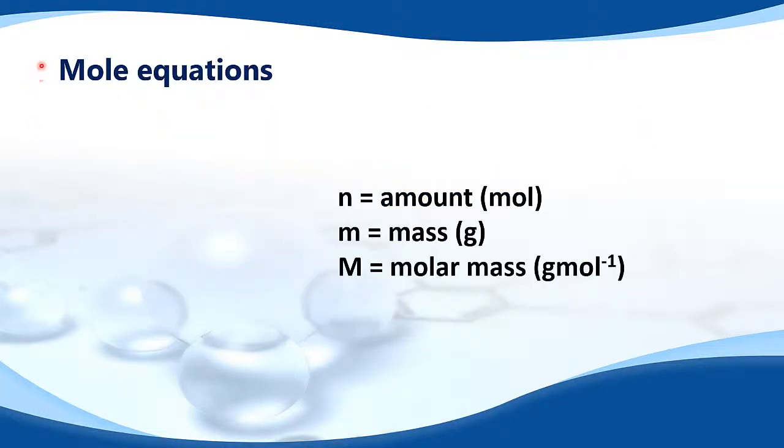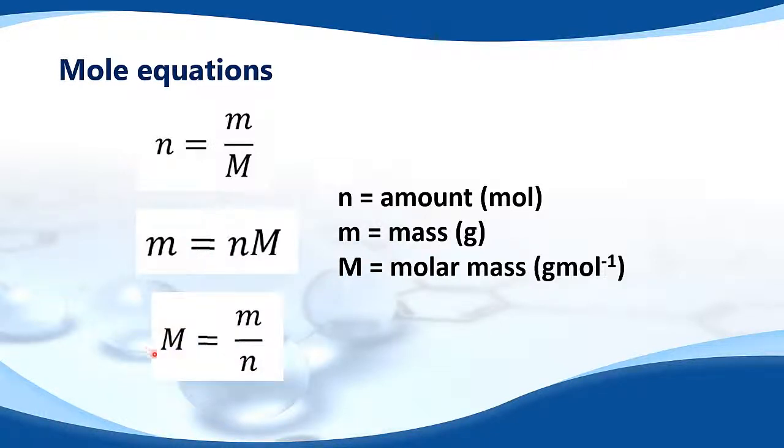Let's look at the mole equations. In these equations, n equals number of moles or amount, small m is mass in grams, big M is molar mass. So here's the first equation that you need to know. Number of moles is equal to mass in grams divided by molar mass. Once you know this equation, you can rearrange it to give you this one. Mass in grams is equal to number of moles times molar mass. And this equation: molar mass is equal to mass in grams divided by number of moles.